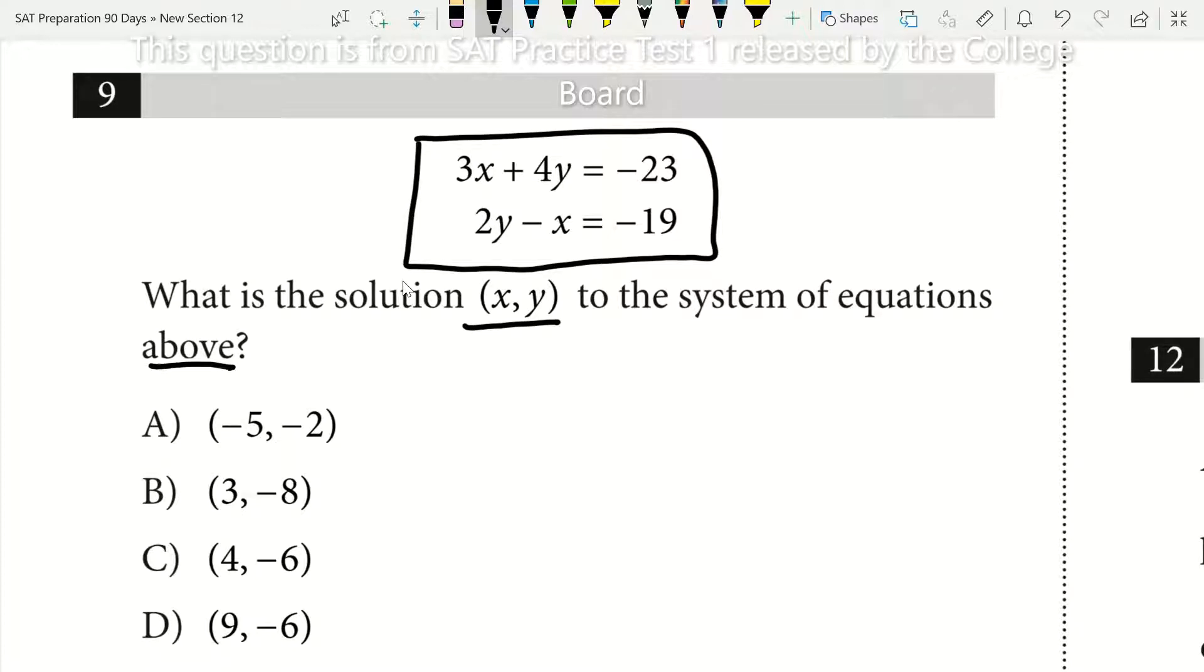Take a look at your answer choices. Find if x or y has all different numbers. In this case, x has all different numbers, but y has two negative sixes. So I'm going to solve for x.